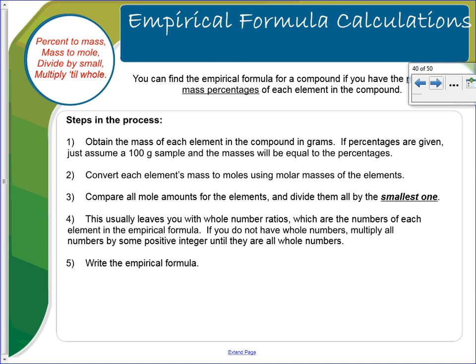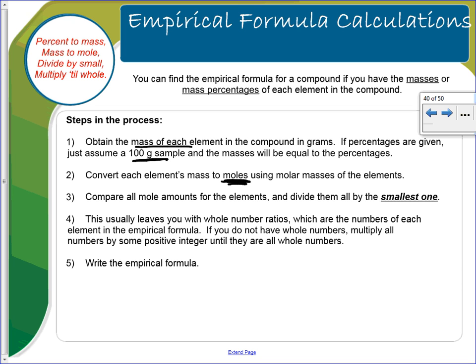You can find the empirical formula for a compound if you have the masses or mass percentages of each element. The steps: first, get the mass of each element. If you're given percentages, assume a 100-gram sample so percentages become grams. Then convert each mass to moles. Compare all mole amounts by dividing by the smallest — this is the mole ratio — which usually leaves you with whole numbers that become the subscripts.